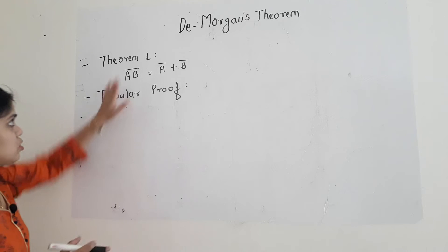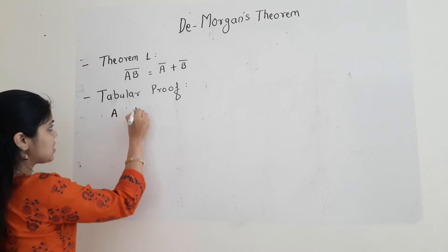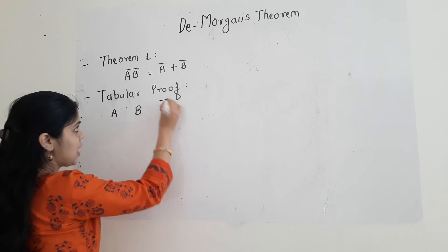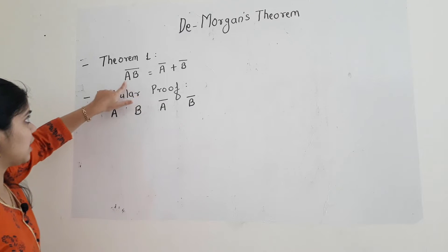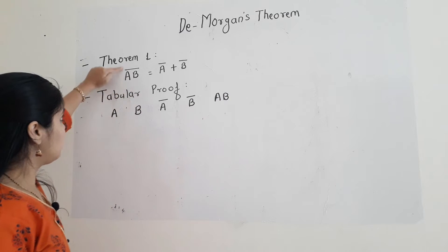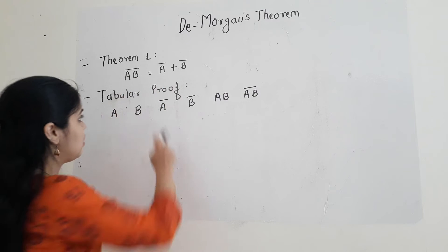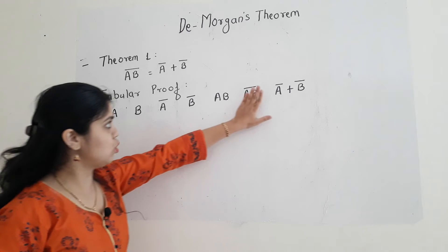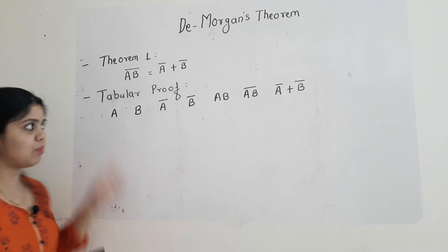Now second is the tabular method. I have to prove LHS is equal to RHS by using the table method. As there are two inputs, I will be taking two columns as input, that is A and B. Next, I have A bar, so I am taking A bar as my next column. Similarly I have B bar as a term, so the next column is B bar. Then I have multiplication of A and B, so I am taking AB as my next column. Similarly I have its complement, so AB bar is my next column — here I will get my LHS. Finally, I have to add the two columns, that is A bar plus B bar. I have to show that this column is equal to this column; if both these columns get proved, then my theorem has been proved by the tabular method.